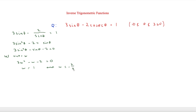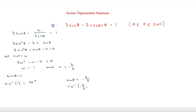Because we let sine theta equal w, we can say sine theta equals 1 and sine theta equals minus two thirds. For sine theta equals 1: sine minus one of 1 gives 90 degrees, and 180 minus 90 also gives 90 degrees, so there is only one answer there. For sine theta equals minus two thirds: sine minus one of minus two thirds gives minus 41.8 degrees, which is not in the range.